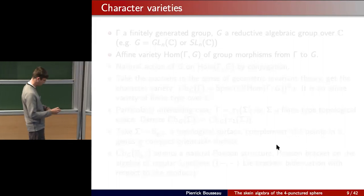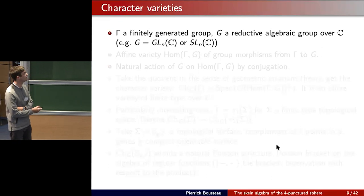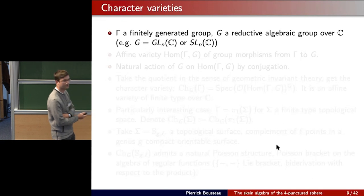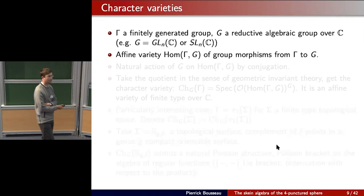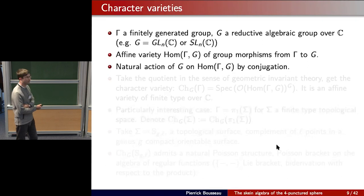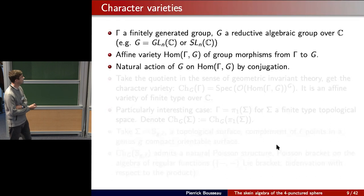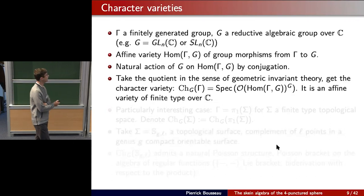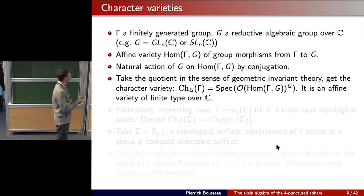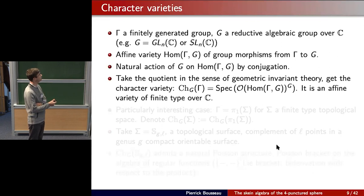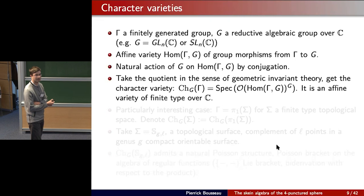Let me start by saying a few general words about character varieties. If you have Γ a finitely generated group and G a reductive algebraic group over the complex numbers — like GL_n(ℂ) or SL_n(ℂ) — then you can construct an affine variety of group morphisms from Γ to G. There is a natural action of G on this affine variety given by conjugation, and you take the quotient in the sense of geometric invariant theory to get something called the character variety.